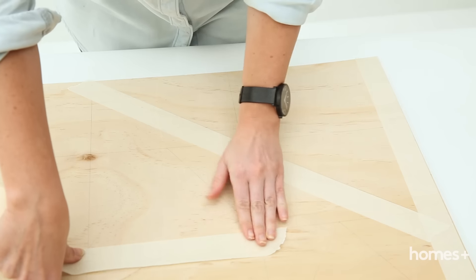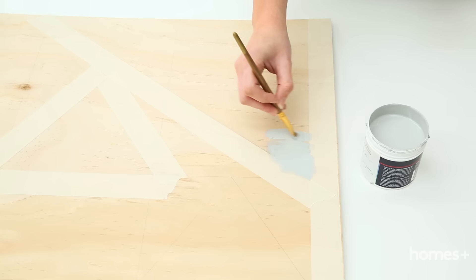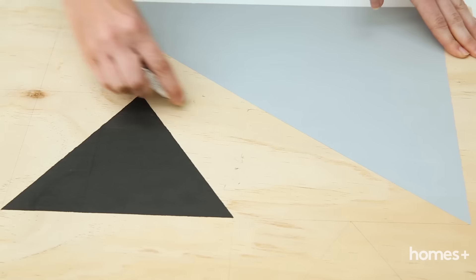Draw as many shapes as you like and then tape off each outline, pressing down firmly to prevent any bleeding. Paint each shape in the colour of your choice and once dry carefully peel the tape off the plywood board and rub out any pencil lines.